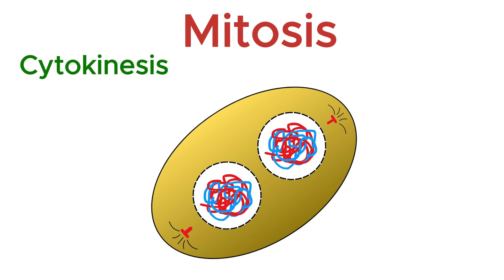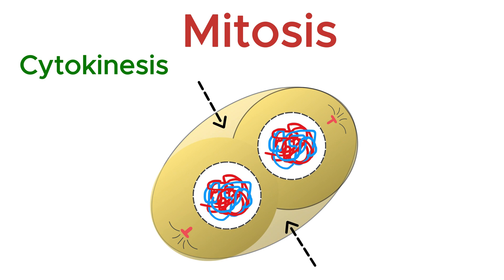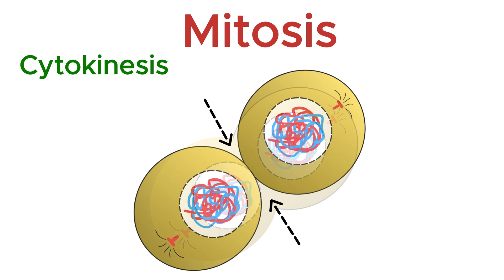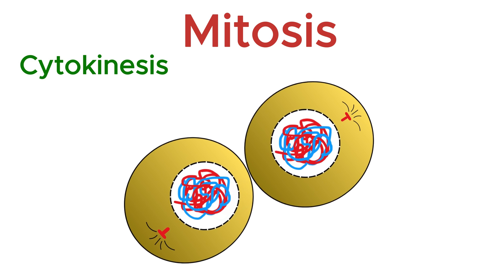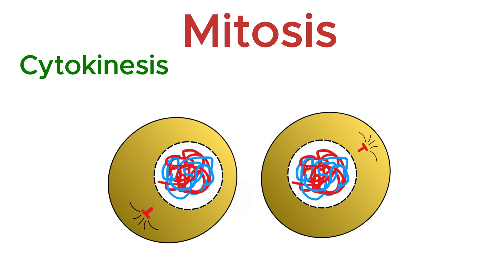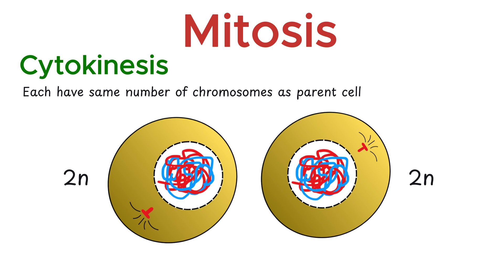Cytokinesis is the final step after mitosis. It is the division of the cytoplasm to form two separate daughter cells. In animal cells, a cleavage furrow forms and pinches the cell into two. In plant cells, a cell plate forms in the center and develops into a new cell wall. As a result, two genetically identical daughter cells are formed, each with the same number of chromosomes as the parent cell.